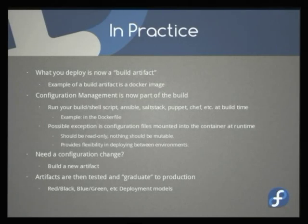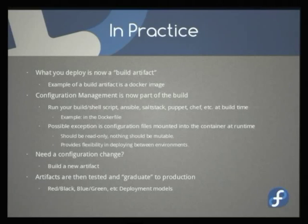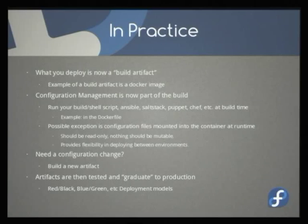The ops team did an update to production, something changed, and your application didn't take that into account. Within the window by which your software graduated from stage to production, something changed out from under it and things crashed. What's your rollback procedure? In some scenarios that can be painful. With container-type technologies, it's very simple because you can change the tag that points to it and restart the service. These build artifacts afford us some interesting capabilities.